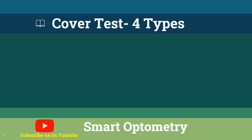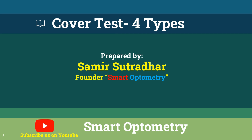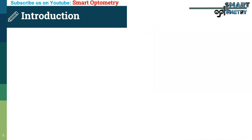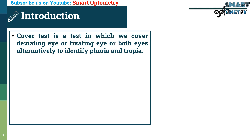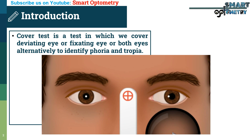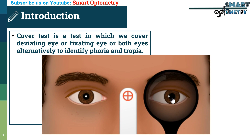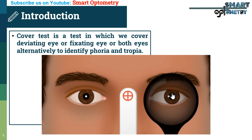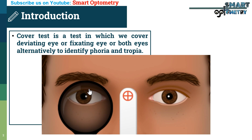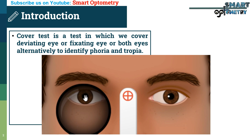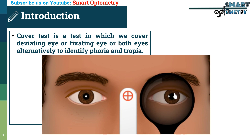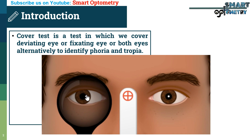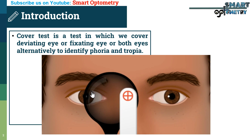Today I will discuss the cover test. The cover test is a test in which we cover the deviating eye, fixating eye, or both eyes alternatively to identify phoria and tropia.